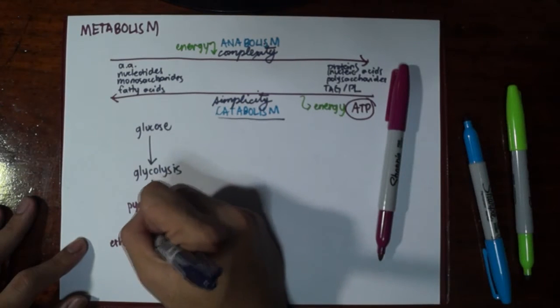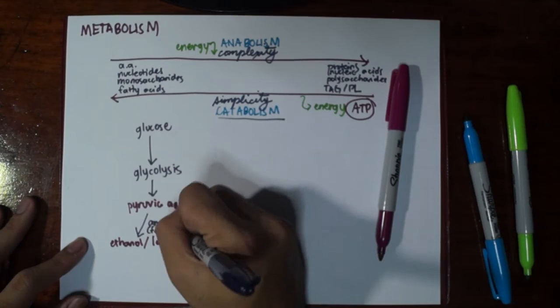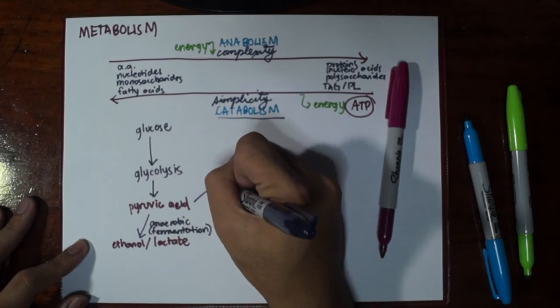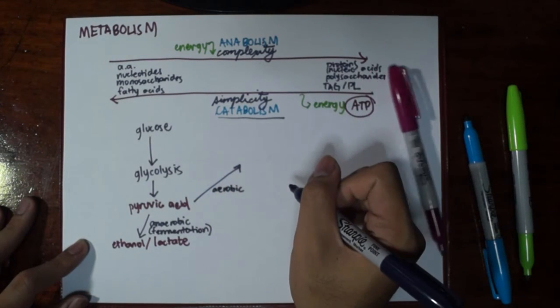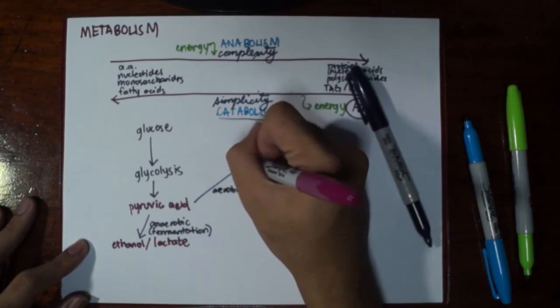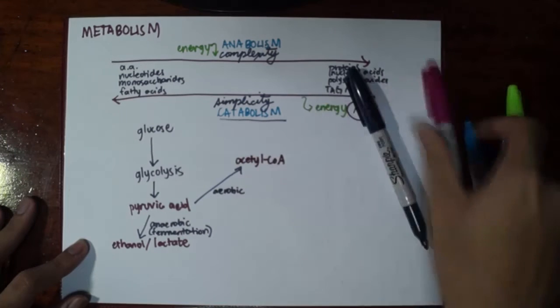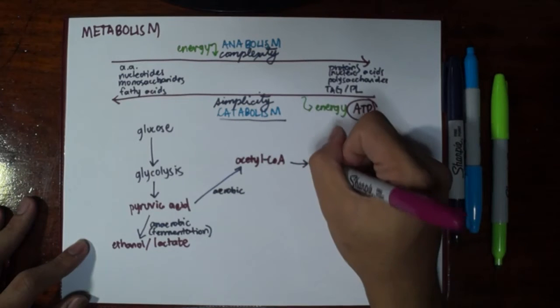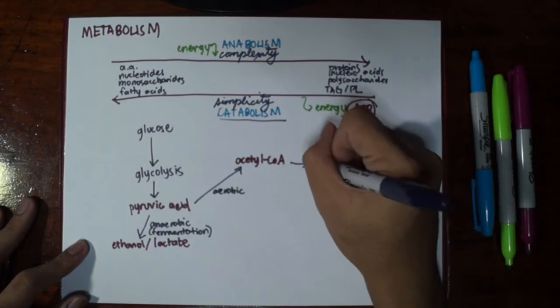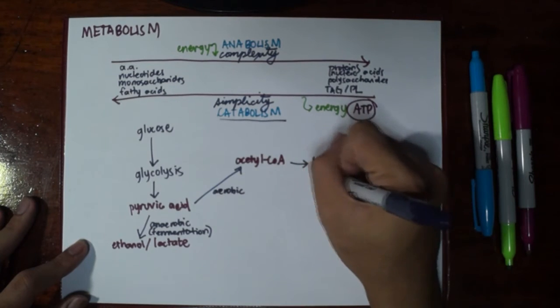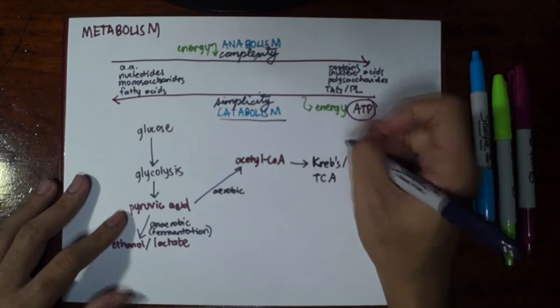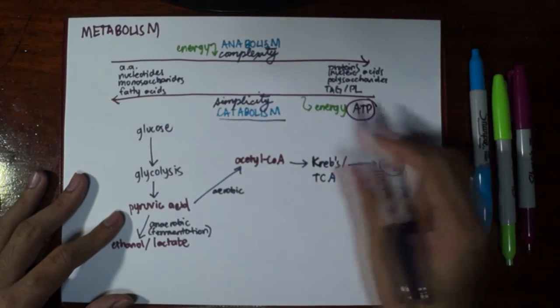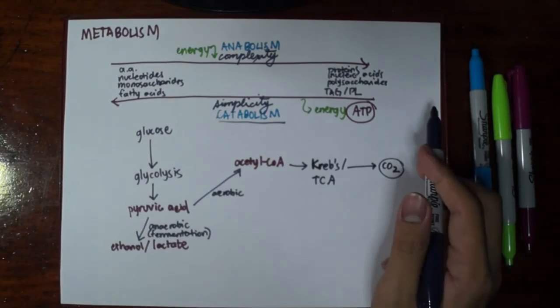The anaerobic process is also known as fermentation. However, if pyruvic acid decides to go aerobic, in the presence of oxygen, it will now be transformed into a compound known as acetyl coenzyme A and will enter a pathway known as the Krebs cycle or the TCA or tricarboxylic acid cycle in order to produce carbon dioxide molecules.